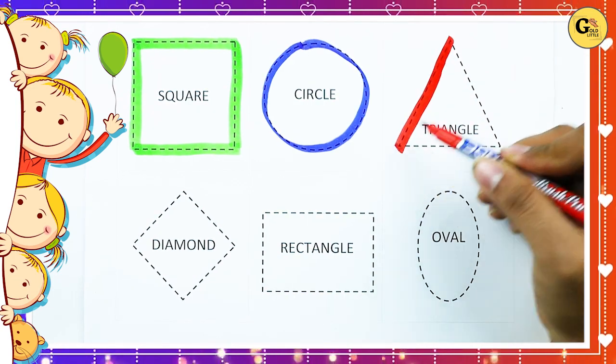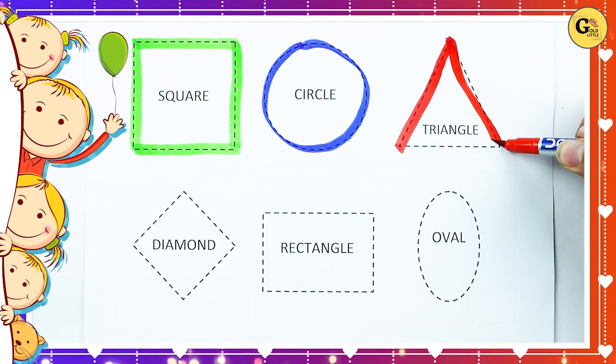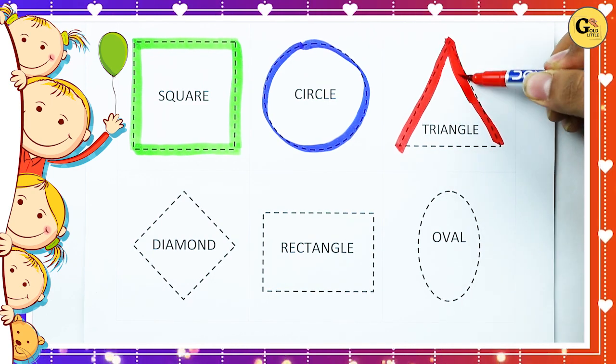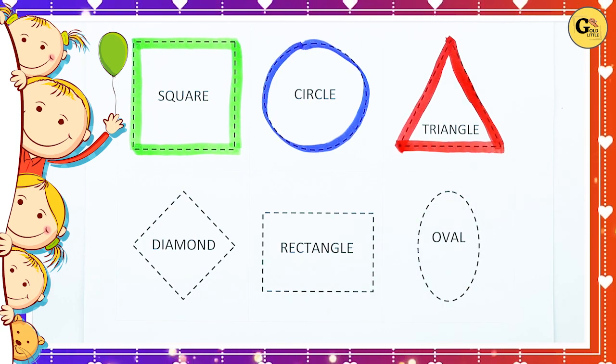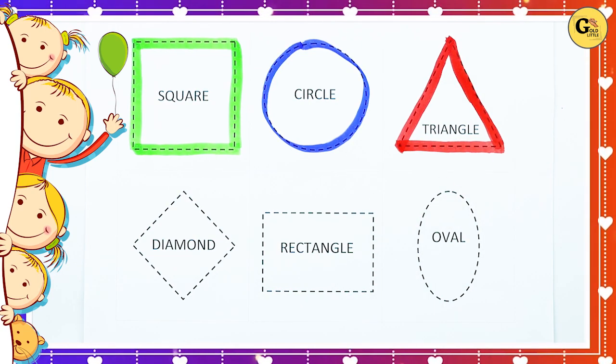One line, two line, two sliding line. It's a two sliding line and one slipping line. It's a triangle with red color.